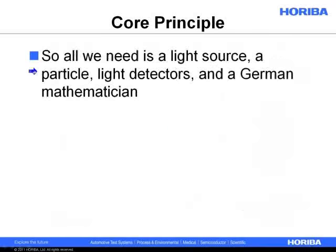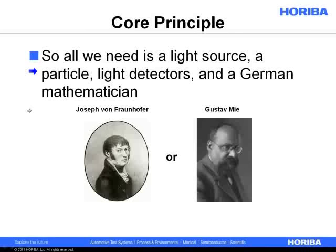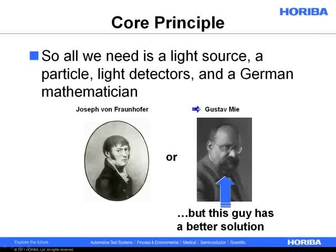All we need to do this measurement is a light source, a particle, some light detectors, and a German mathematician. We can use one of two: Joseph von Fraunhofer, who developed the Fraunhofer approximation, or Gustav Mie, who developed the Mie scattering theory. The important thing to take away is that Mie scattering is ultimately a better solution for most particles. It extends the measurement range down into the nanometer scale, whereas the Fraunhofer approximation starts running out of steam around 20 to 50 microns, depending on the wavelength of light.